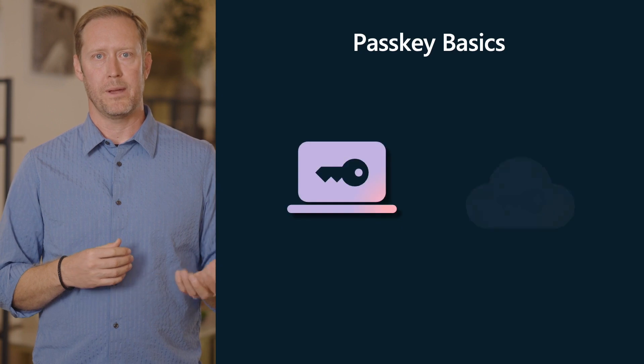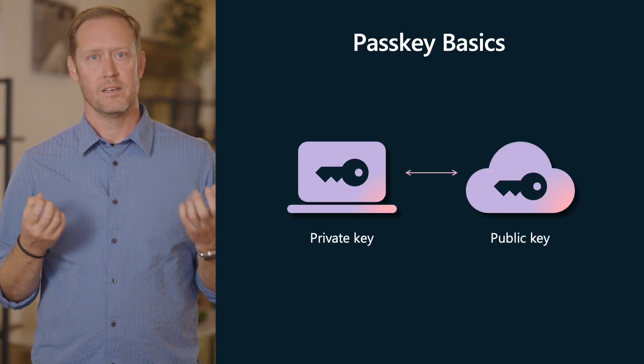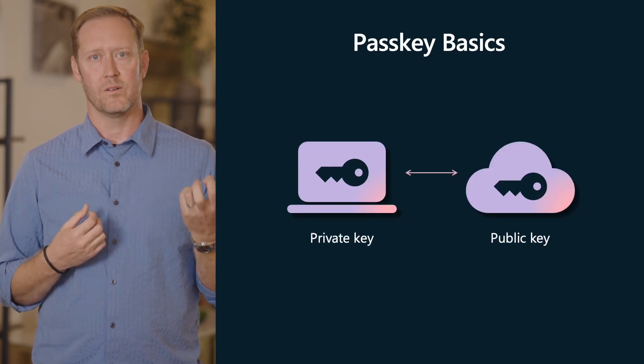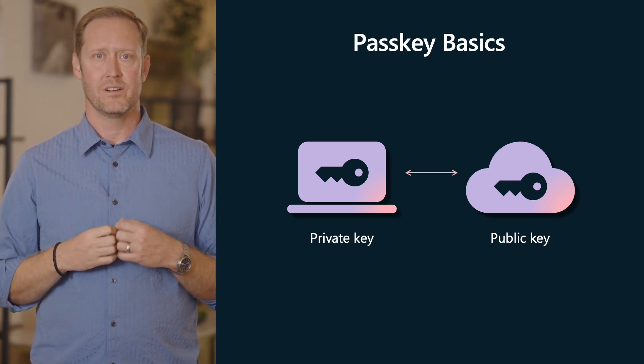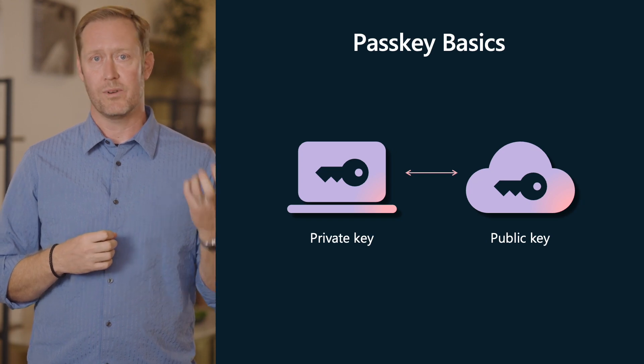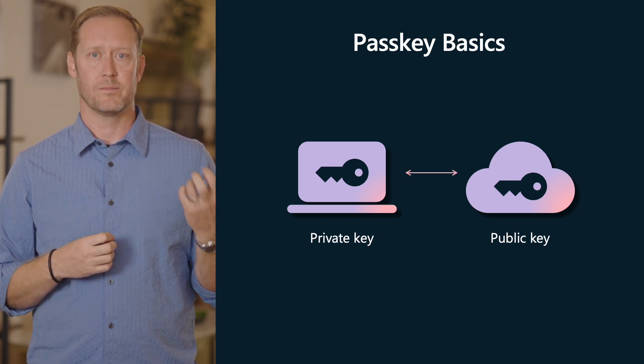Instead of sending a password over the Internet, your device generates a pair of keys: a private key and a public key. The private key is stored securely on your device, and the public key is registered with the website or application. To sign in, your device simply proves that it has the private key by signing a challenge from the website or application. The website verifies the signature using the public key and grants you access. In Windows, we store this private key within Windows Hello. This process is much more secure than passwords because your private key never leaves your device and cannot be stolen by hackers or through phishing attacks.